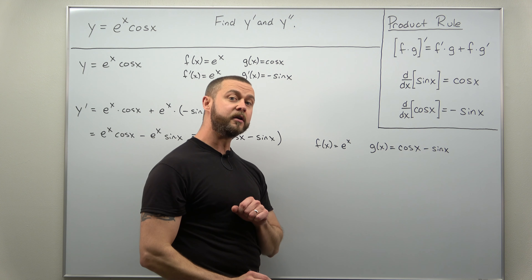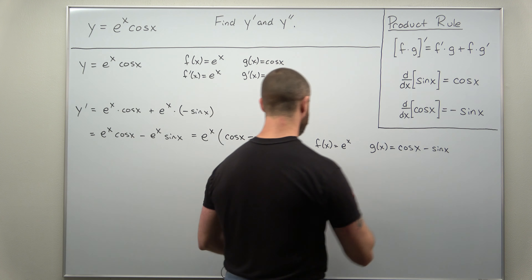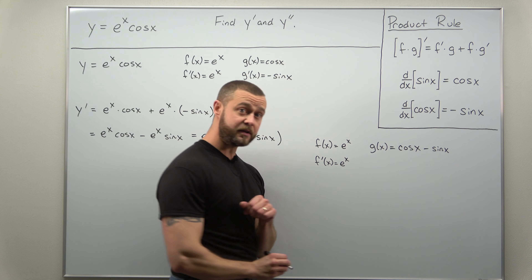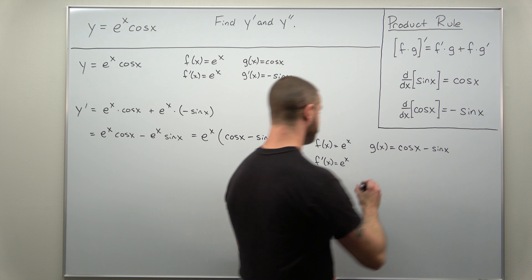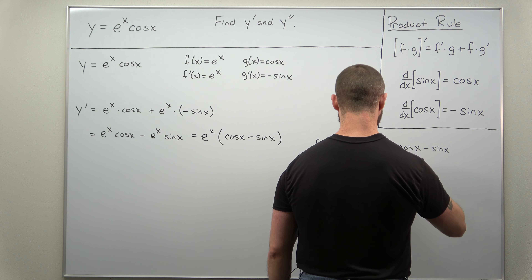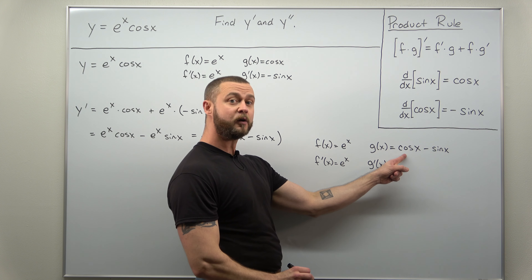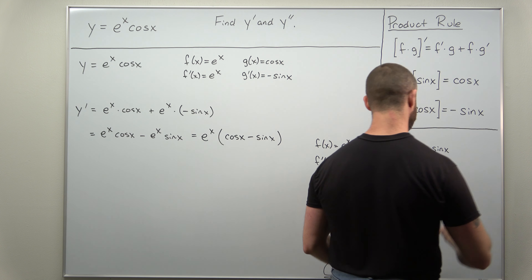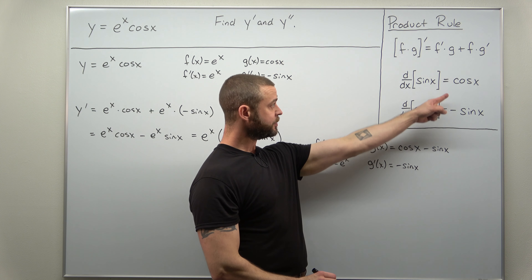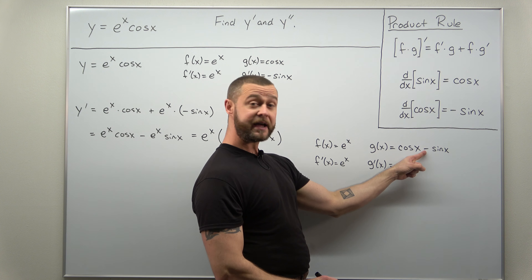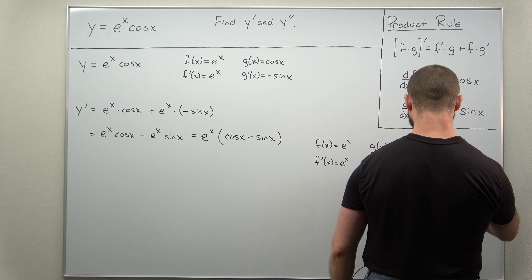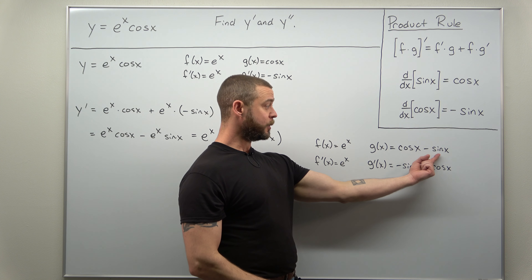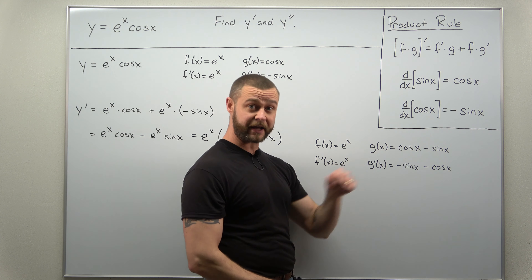We're going to take our time calculating the derivative and finding g prime. F prime is again e to the x for this second application of the product rule, but g prime is a little more work. The derivative of cosine of x is negative sine of x, but be careful — sine of x differentiates to cosine of x, and the minus there acts as a constant multiple. So g prime gives us negative sine of x minus cosine of x.